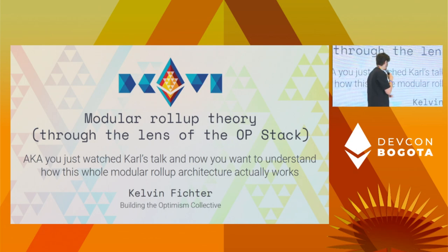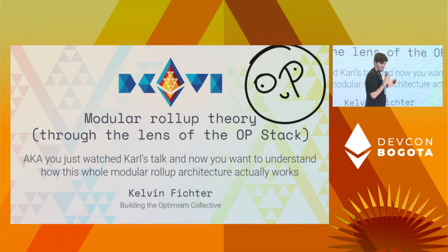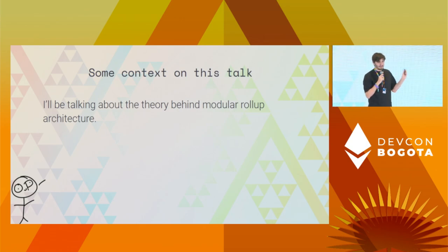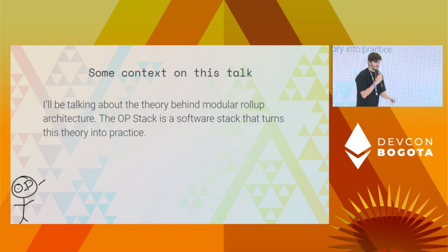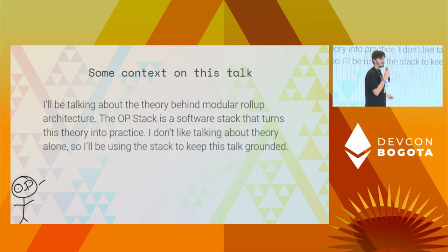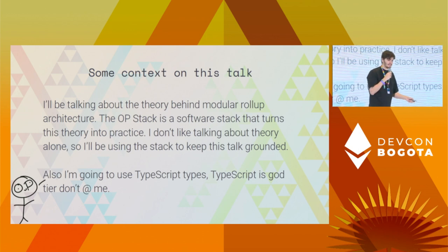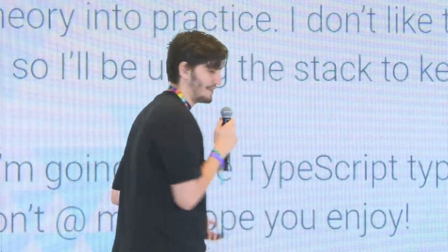Modular roll-up theory through the lens of the OP stack — you just watched Carl's talk and now you want to understand how this whole modular roll-up thing actually works. We're going to do drawings. I want to give some context. I'm going to be talking about the theory behind modular roll-up architecture. The OP stack is a specific software stack that turns this theory into practice — taking that theory and turning it into specific software components that you can use to build modular chains. I'm also going to use TypeScript types to represent things. TypeScript is God-tiered.